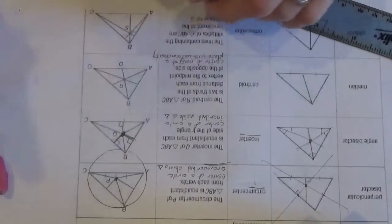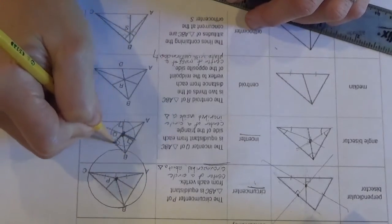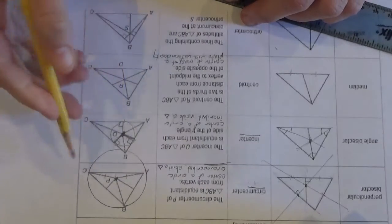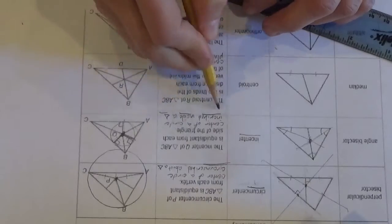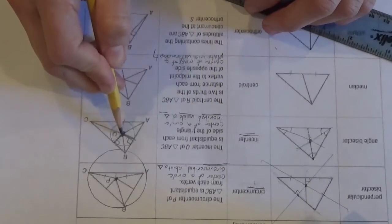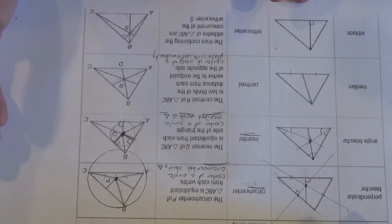if I were to draw a circle here, I'll just do it freehand, you could draw a little circle inside that's inscribed inside of the triangle, so the incenter is the center of a circle inscribed inside the triangle. Exciting stuff!